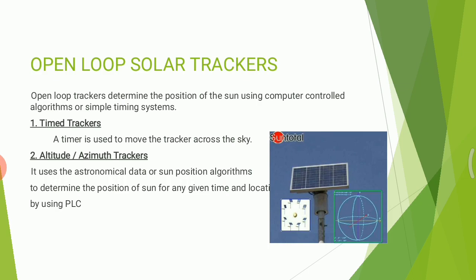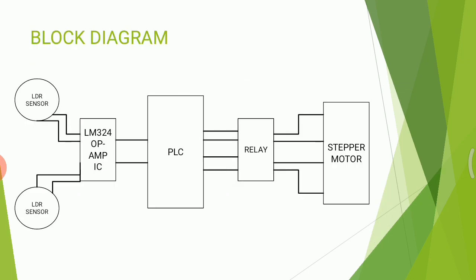In open loop solar trackers, there are two types. Open loop trackers determine the position of the Sun using computer control — that is, PLC. Timer trackers use a fixed timer, and altitude is pre-programmed with the help of PLC programming.